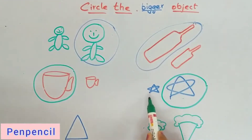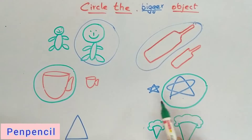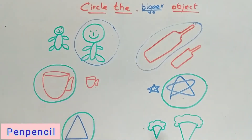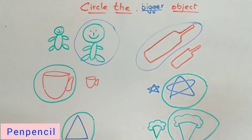Bigger star, small star. Now this is a triangle — a shape — which one do we have to circle, this one or this one? Yes, correct — this one, this is the bigger one. Now the ice cream cone — which one do we have to circle? Yes, correct — this one. You are correct!